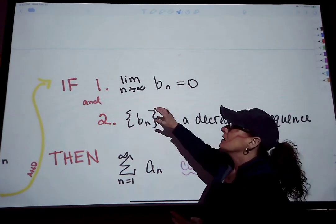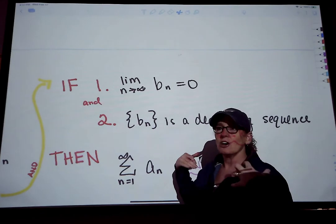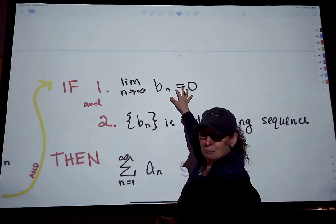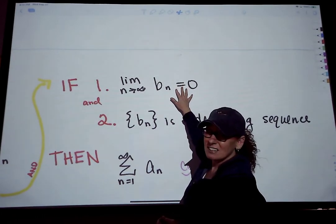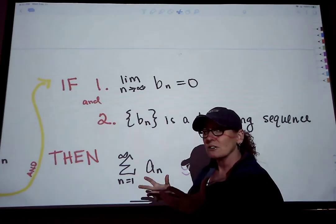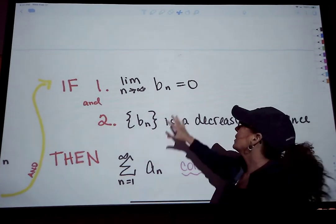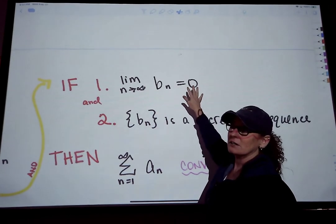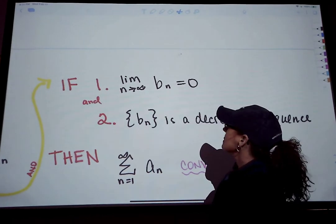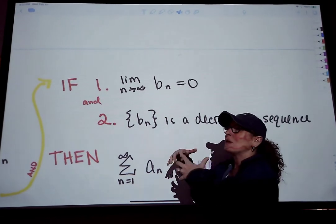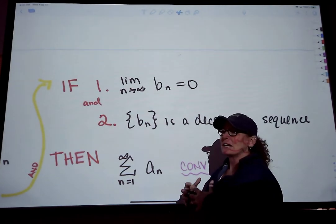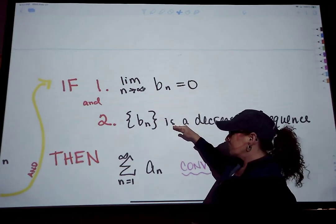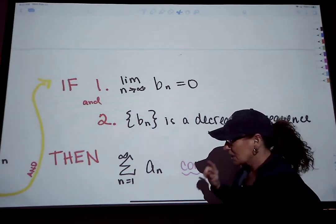Keep in mind: if your series isn't alternating, this is not a good test. There was an nth term divergence test for any sequence that's not alternating, and we said we couldn't make a conclusion if the limit equaled zero — we can only conclude divergence if the limit didn't equal zero. For alternating series, if you meet those two requirements — terms approach zero and it's decreasing — then you can say the series converges.